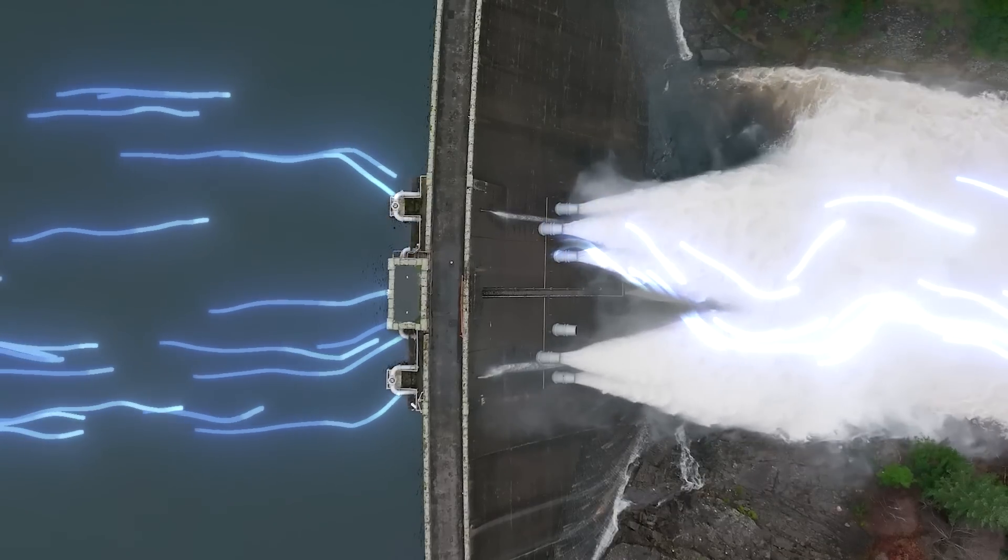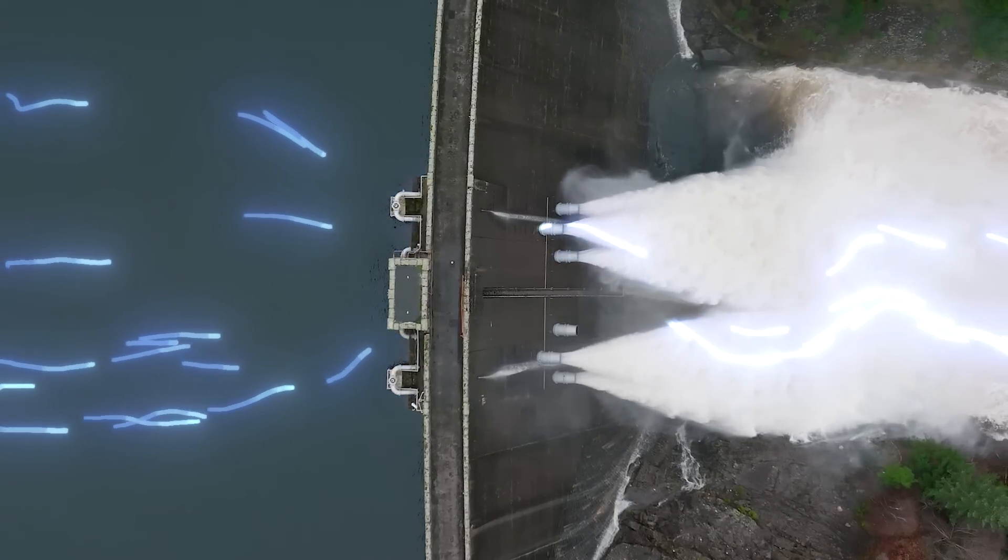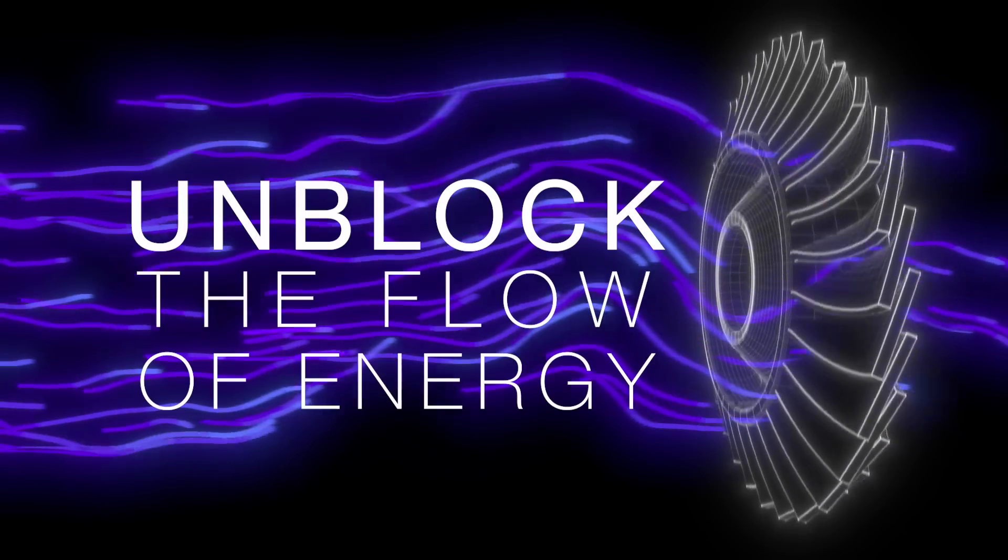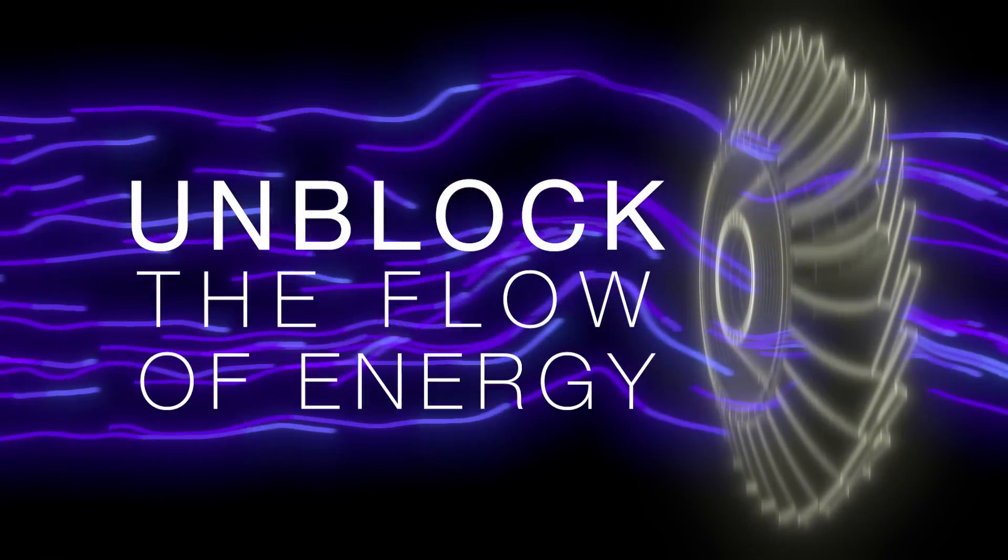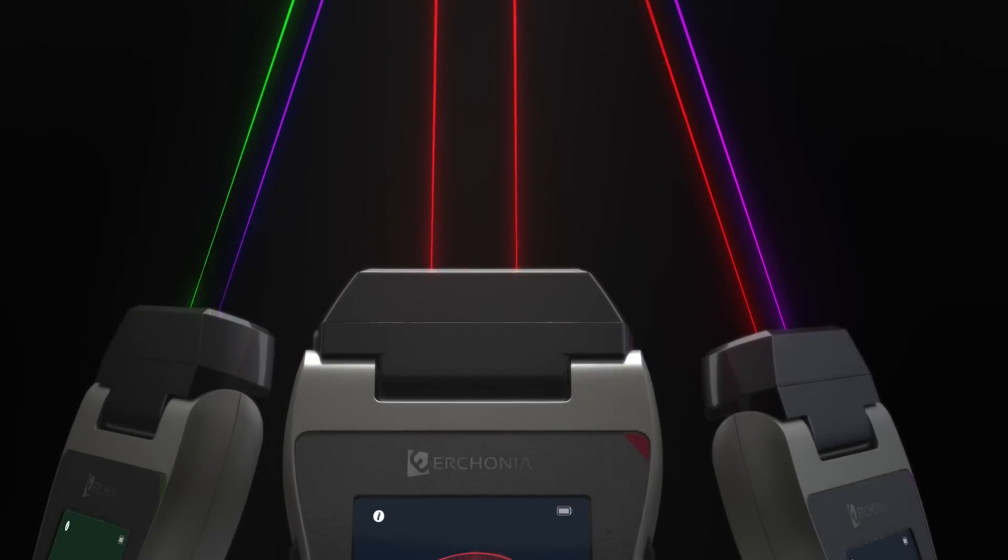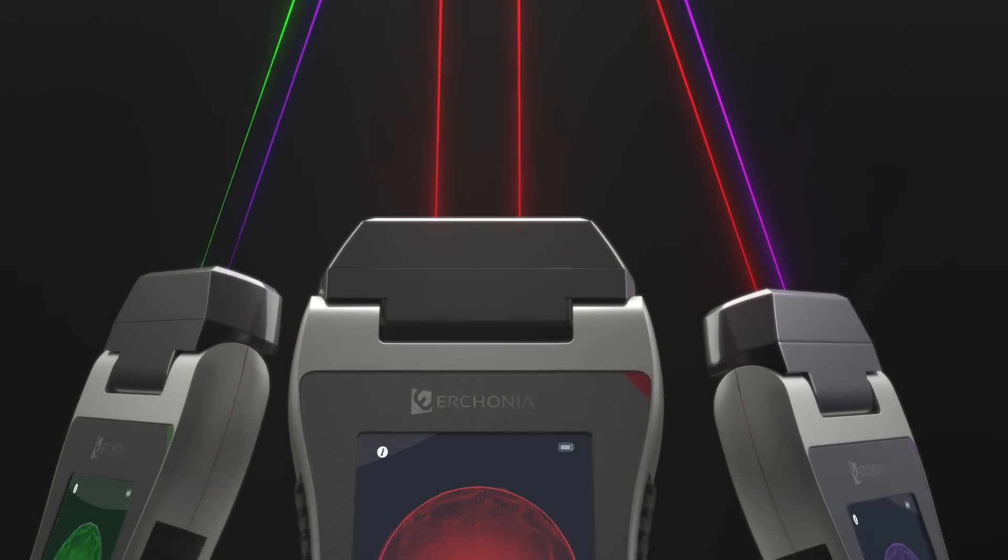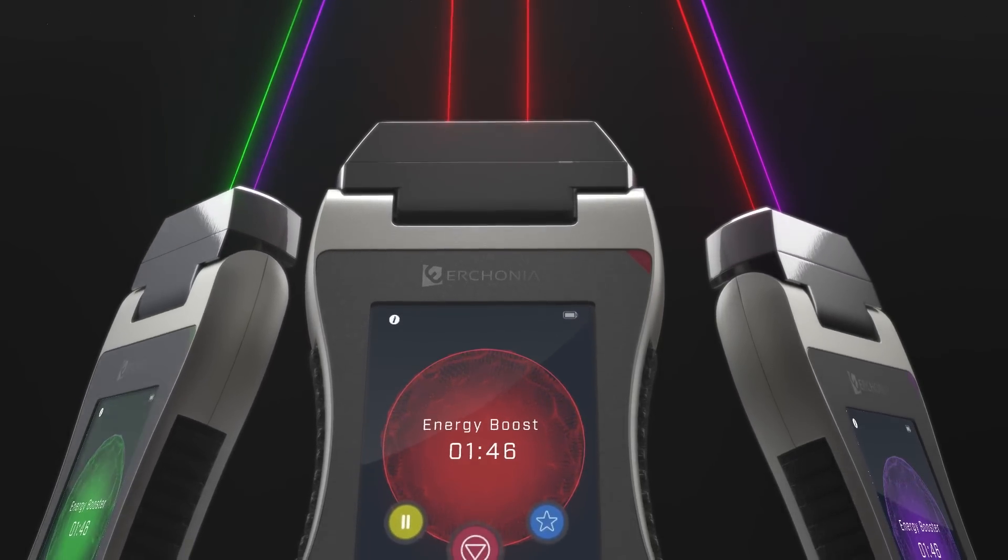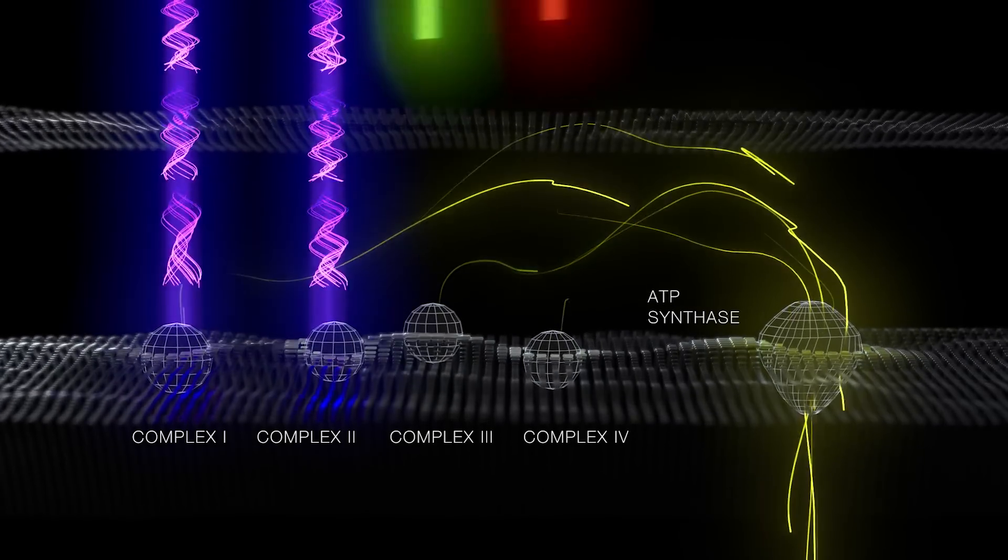But sometimes the flow of water or electrons gets blocked, slowing our production of ATP and energy. Unblock the flow with Erconia's red, green, and violet lasers, each shown to increase different complex enzyme production. When complexes one through four are targeted,